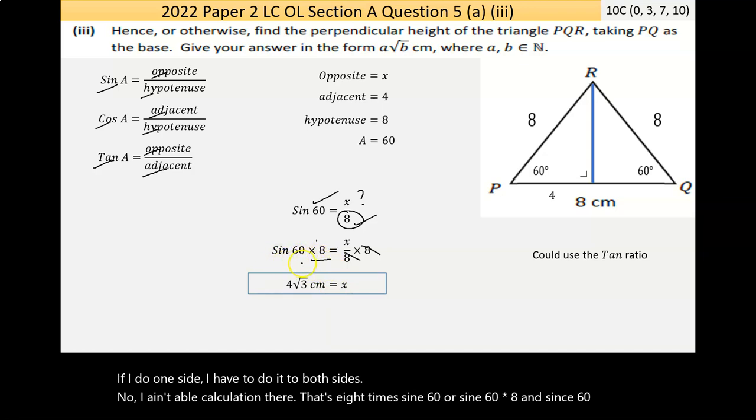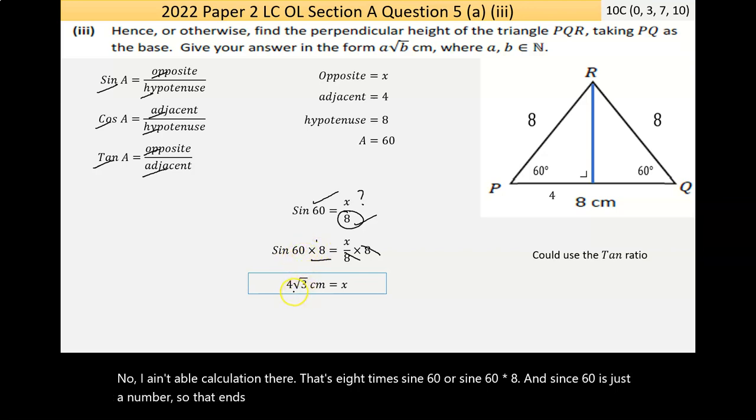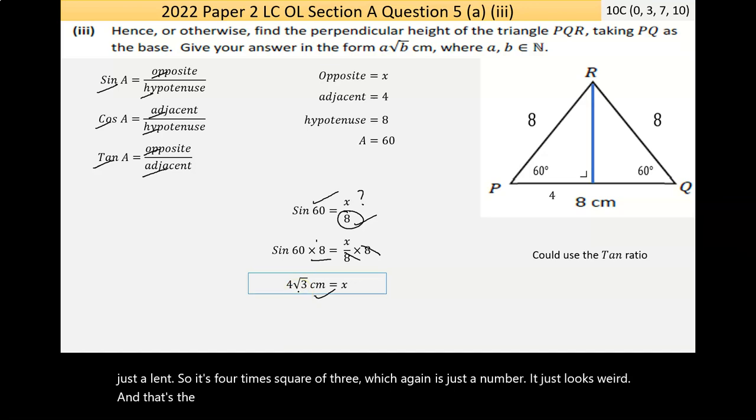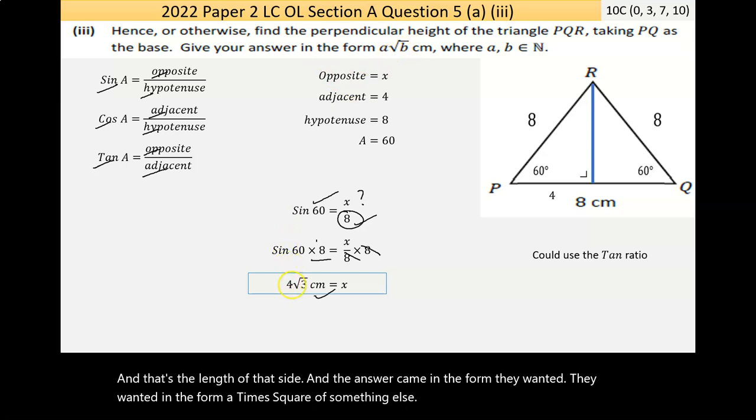Now once I have these in place, I've got a chunk of marks now. I've chosen the right strategy. I've shown I know what to do. Now it's just the algebra. And I'm going to try to get rid of the 8 on the bottom here. Now the way to get rid of something on the bottom of a fraction is always to multiply by it. So it'll be multiplying by the top. So they will cancel. If I do one side, I have to do it to both sides. Now I end up with a calculation there. That's 8 times sine 60, or sine 60 times 8. And sine 60 is just a number.